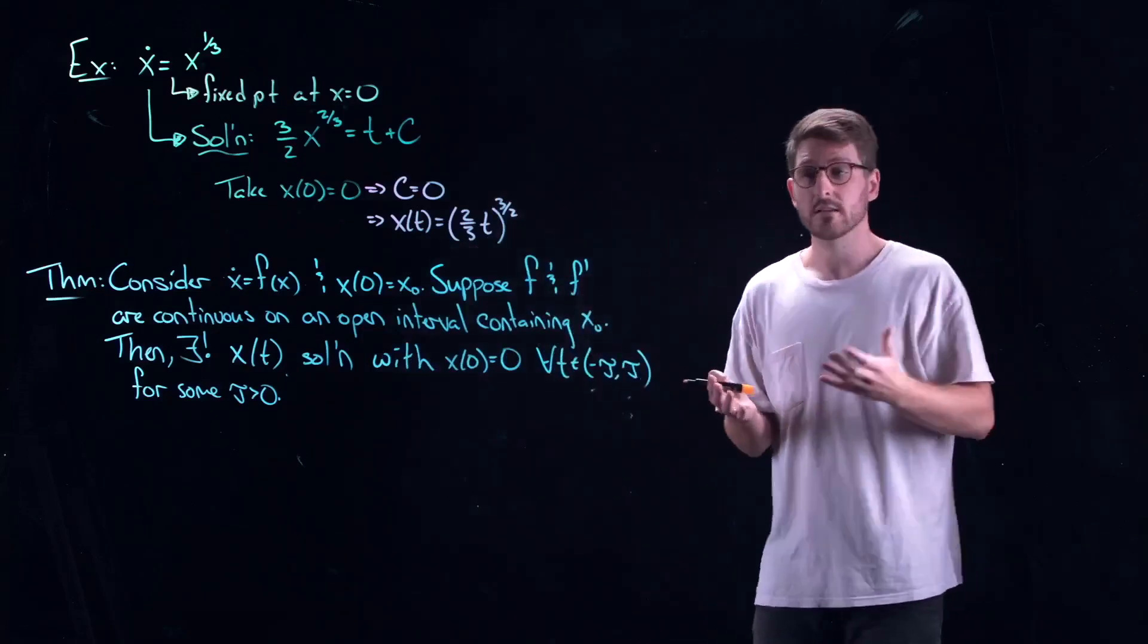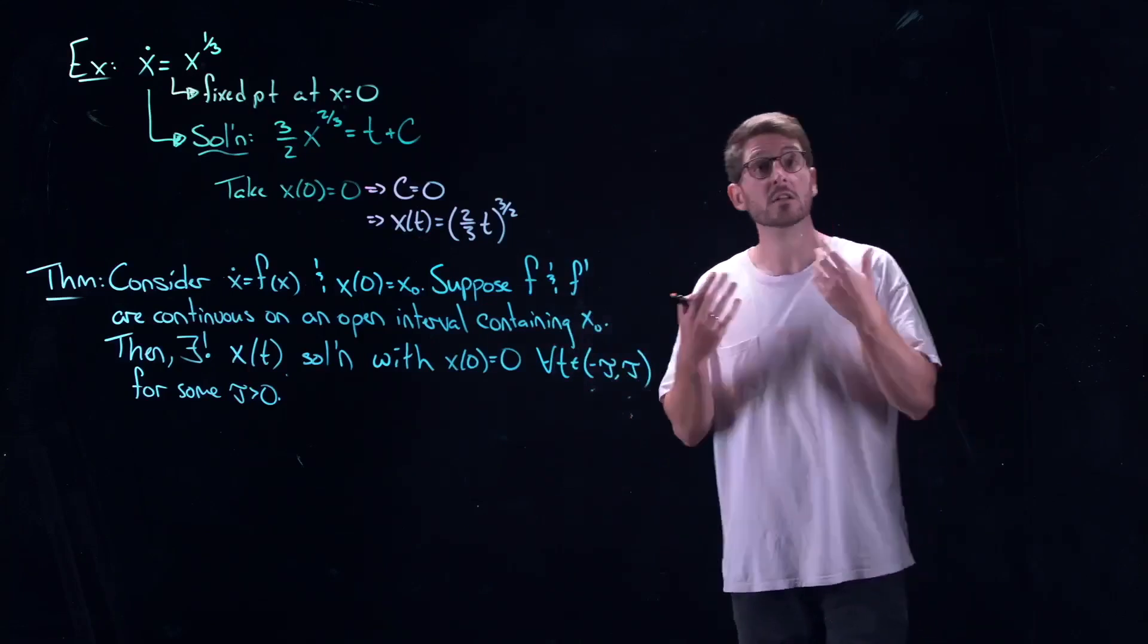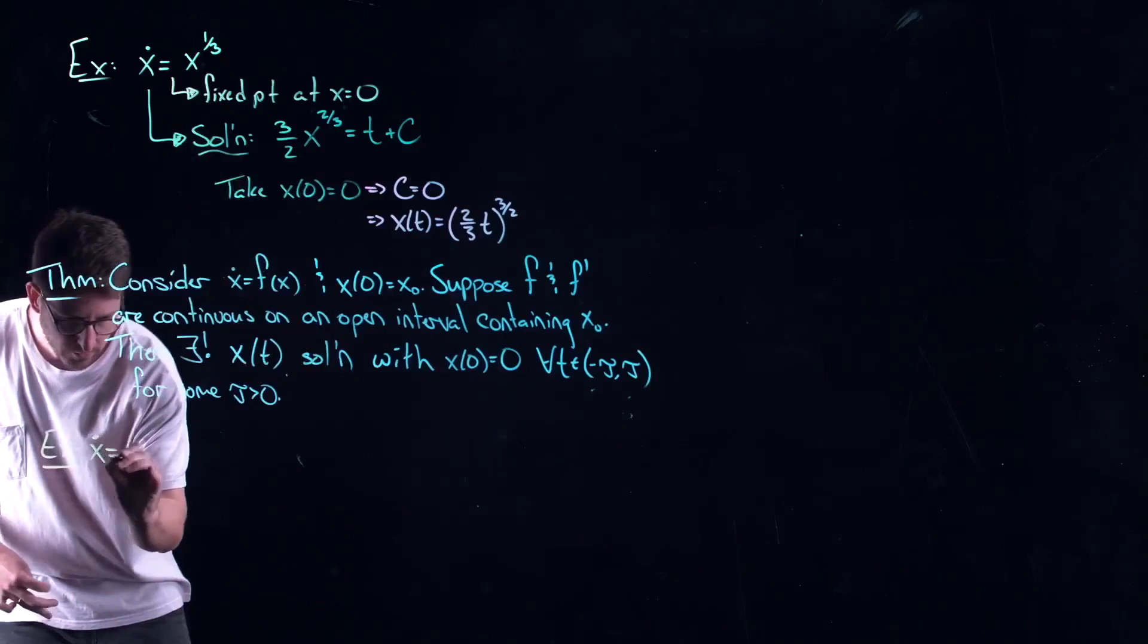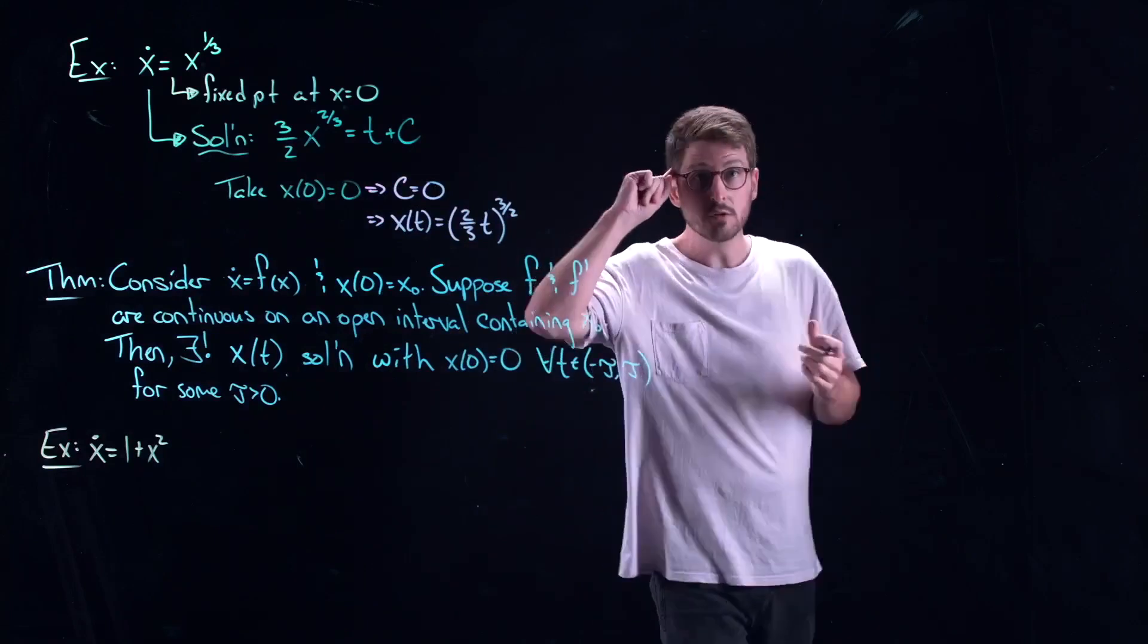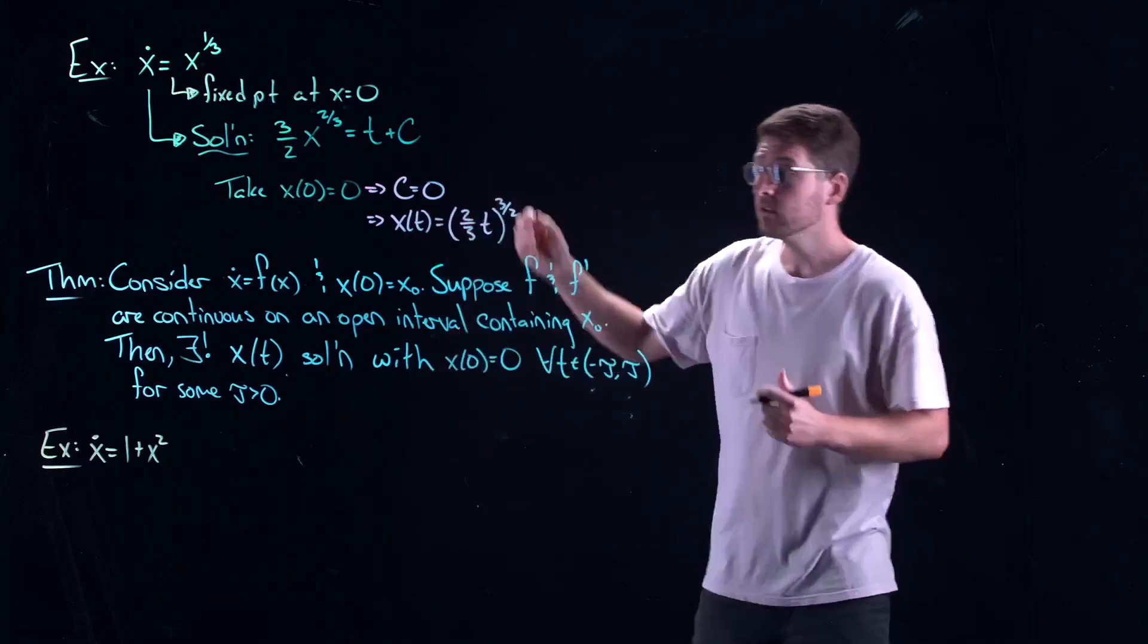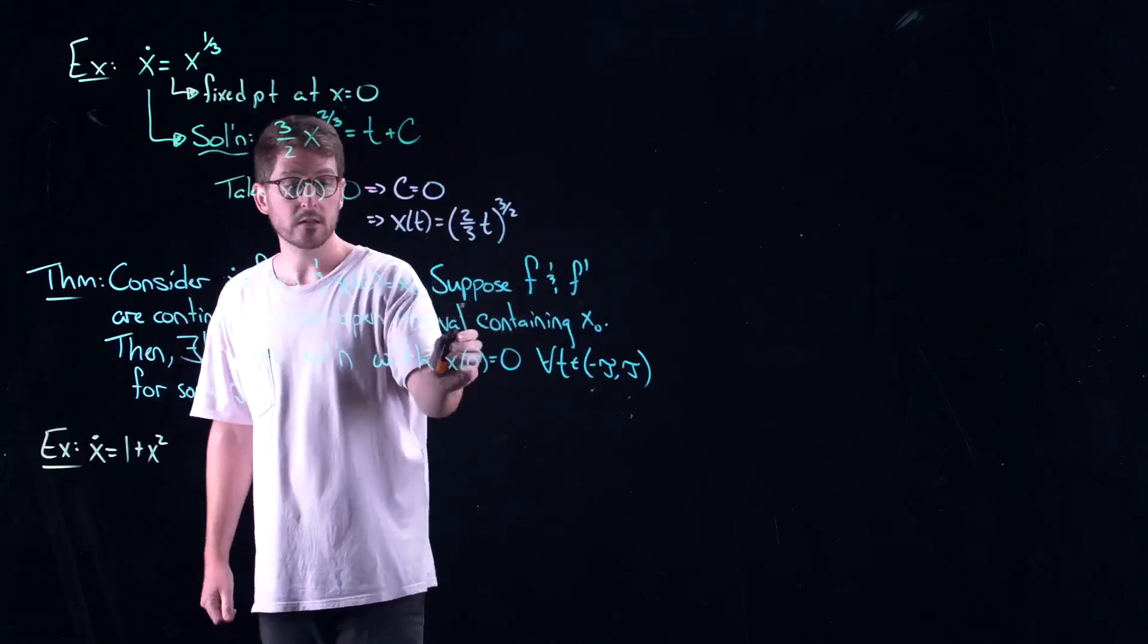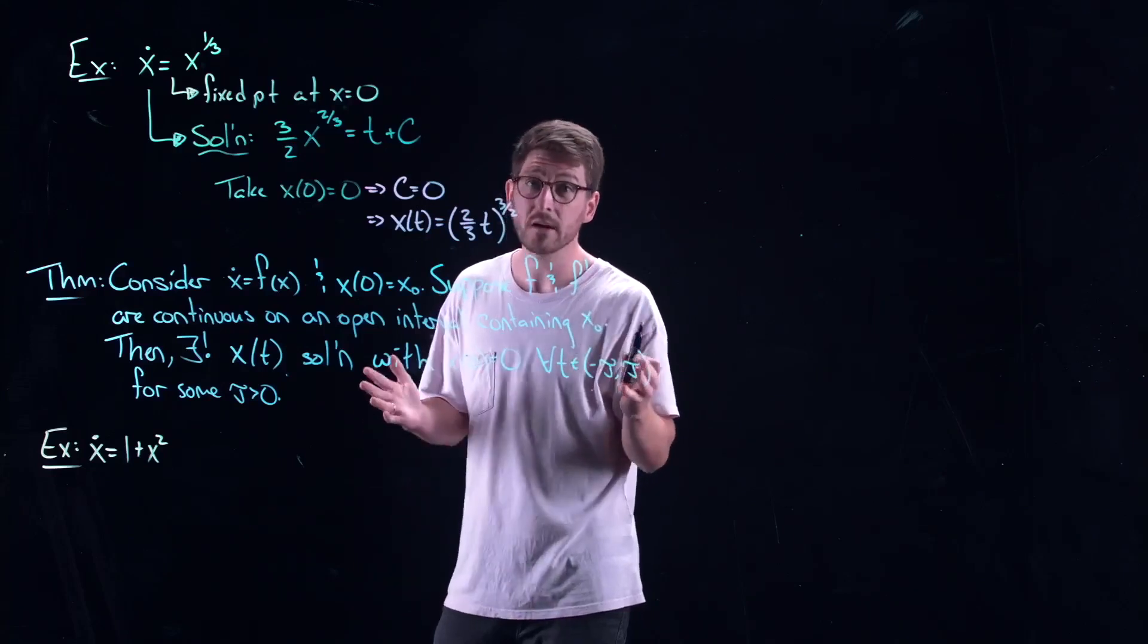So that just means for all intents and purposes we really just need to have f and its derivative to be continuous. And again, this should make sense. We've seen its derivative showing up in linear stability analysis, taking things like Taylor expansions. To do Taylor expansions you need smoothness. You need differentiability and continuity here. Let's take an example. Let's do 1 plus x squared. So the first thing I do a little simple calculus check. The right-hand side is continuous and its derivative is continuous everywhere. So does that mean that the existence uniqueness theorem tells you my solution exists for all time? No. Be very careful.